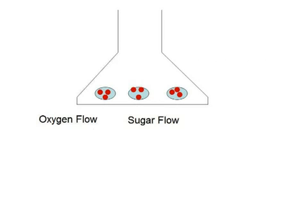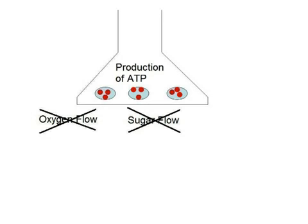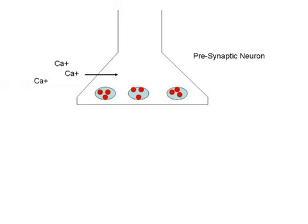Lack of oxygen and sugar causes the neuron to stop making ATP. ATP-reliant ion transport pumps fail, causing the cell to become depolarized, allowing more calcium to flow into the cell.